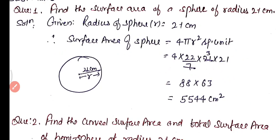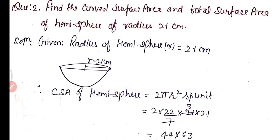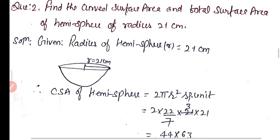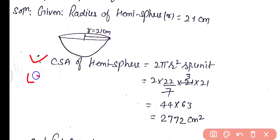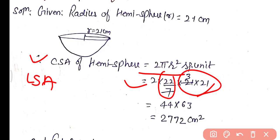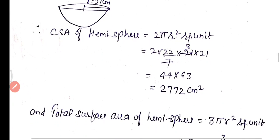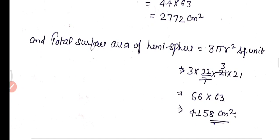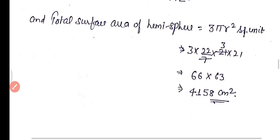Question number 2: find the curved surface area and total surface area of a hemisphere of radius 21 centimeter. Curved surface area = 2πr² = 2 × (22/7) × 21 × 21. After simplifying, you get 2772 centimeter square. Total surface area = 3πr² = 3 × (22/7) × 21 × 21. After simplifying, 66 × 63 = 4158 centimeter square.